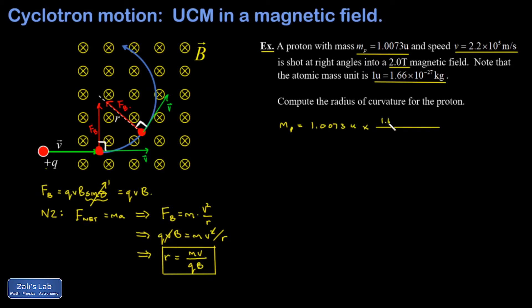multiplied by 1.66 times 10 to the negative 27 kilograms for each atomic mass unit. And my atomic mass units cancel out. I've got 1.67, just keeping three sig figs, times 10 to the negative 27 kilograms.